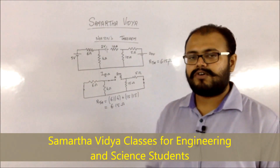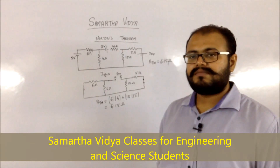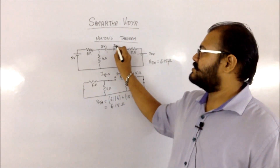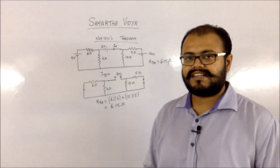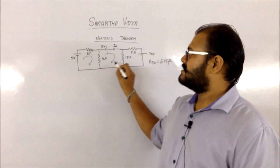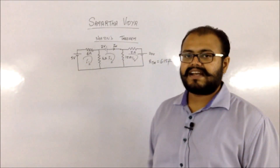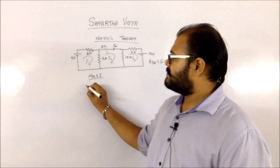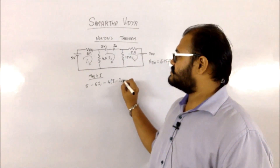The next step is to find Norton's current, or the short circuit current IN. To find the short circuit current, after removing the resistance you replace it with a short circuit and label the current IN right there so you know where to find it. You can use any analysis like nodal or mesh analysis. Going with mesh analysis, you define mesh currents I1, I2, and I3. For mesh 1, the KVL equation is: 5 minus 6·I1 minus 4·(I1 minus I2) equals 0.